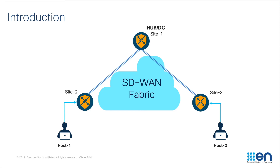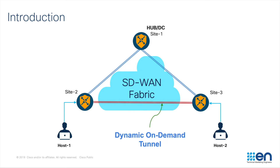host 1 and host 2 send some traffic to the branch routers. As a result, the tunnel shown in red is the dynamic tunnel that gets established between site 2 and site 3. The traffic directly flows through this newly created dynamic on-demand tunnel.